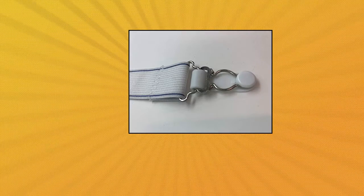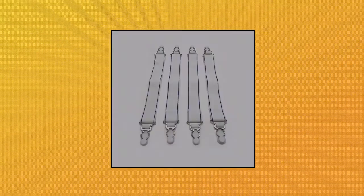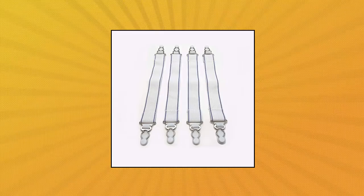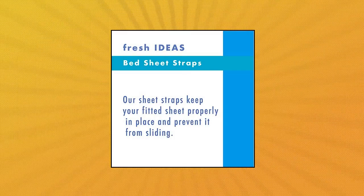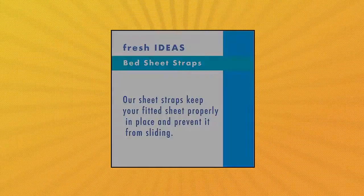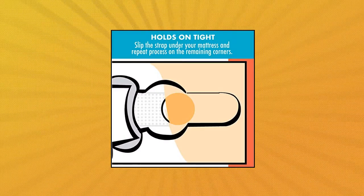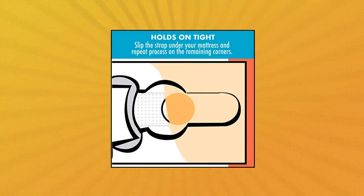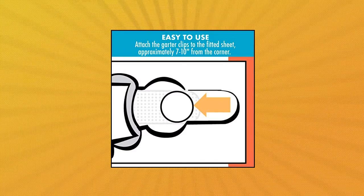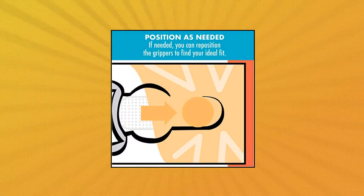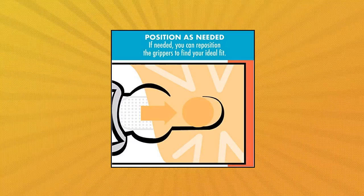Bed Makers Fresh Ideas Bed Sheet Straps Keeps Sheets in Place Overnight. Sheet straps will keep fitted sheets from slipping off the corners of the mattress, and are perfect for restless sleepers, thick mattresses, and anyone who wants to give their bed a hotel-quality look. Easy to attach, place the clips about 7-10 inches from each side of the sheet corner, then slip the sheet strap under the mattress.